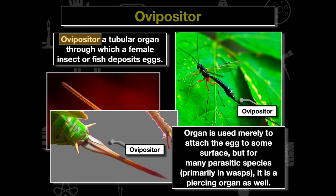This organ is used to attach an egg to a surface, but if we look at this wasp, it actually uses the ovipositor as a spear to inject into a host. This wasp is parasitic — what it does is inject eggs into a host organism, which enables the eggs to be incubated and eventually hatch inside that host.